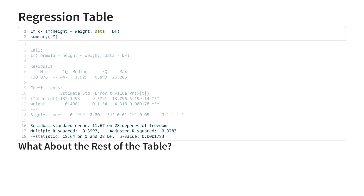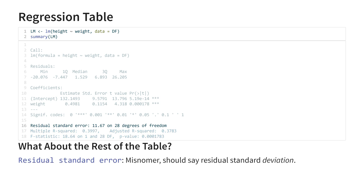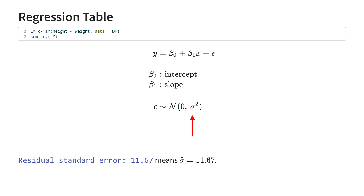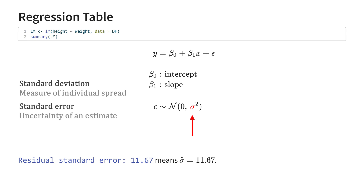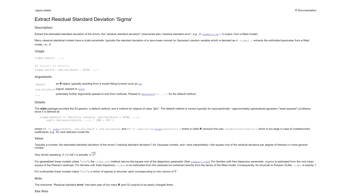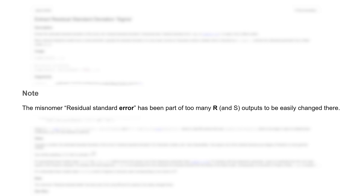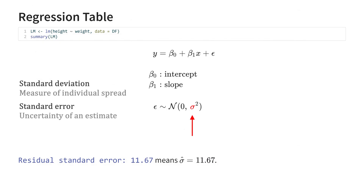That brings us to the last part of the table, which does actually provide some useful information. At the top we see the standard deviation of the residuals. This is the extent to which individual observations differ from the regression line — it is the estimate of sigma in the normal distribution we assume for the error term. Now, standard deviation and standard error are two entirely different things, so why is it called residual standard error if it shows a standard deviation? Some digging in the help files reveals that it is just an old misnomer, left behind from the early days of R and its preceding language S. The output calls it residual standard error, and from now on you're going to read it as residual standard deviation, because it shows you the spread in the residuals — how much individual observations tend to differ from the line.